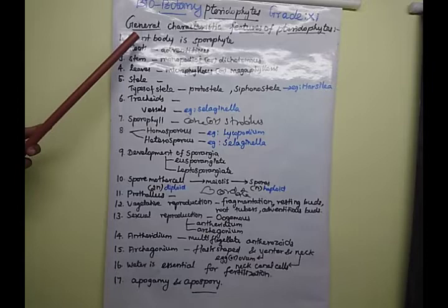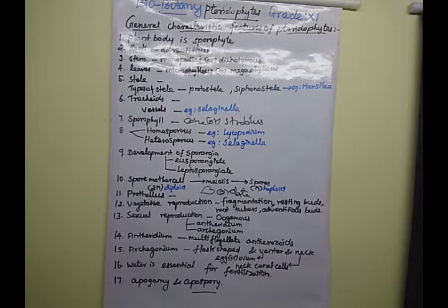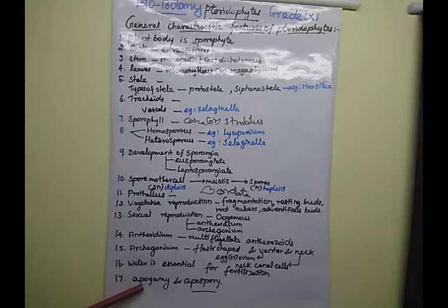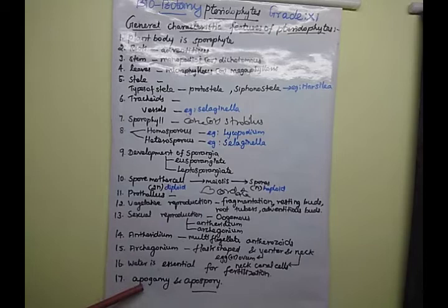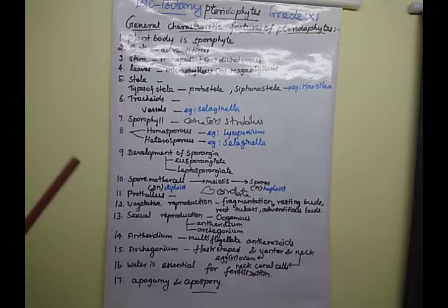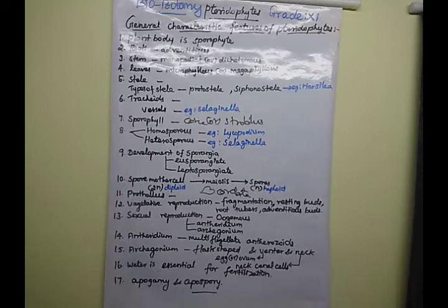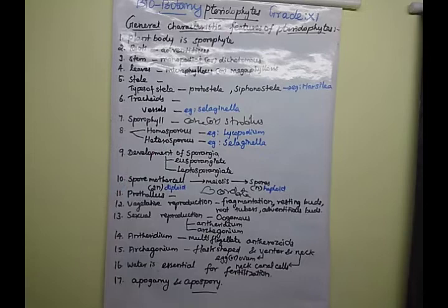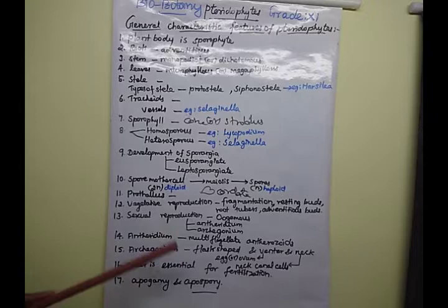These are the general characteristic features of Pteridophytes. For exams, you need to prepare five points about Pteridophyte general characters. Small questions may include: what is sporophyte, what is prothalus, what is apogamy, what is apospory. You may also be asked to differentiate eusporangiate and leptosporangiate, and define homosporous and heterosporous.